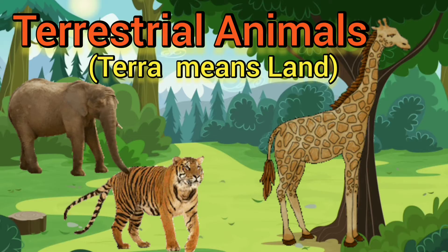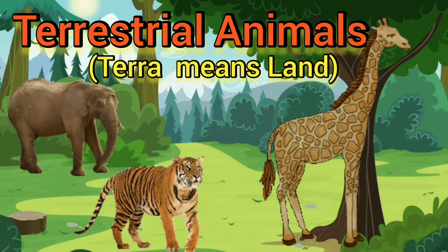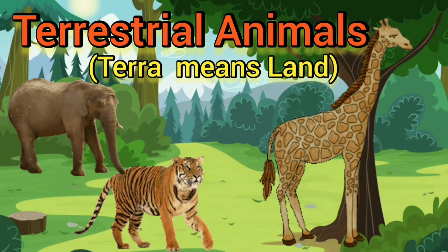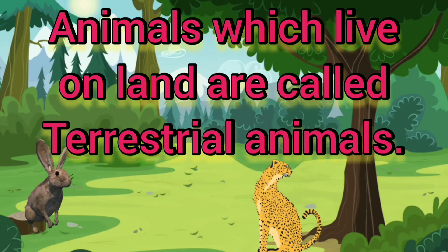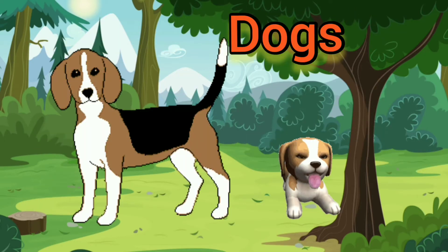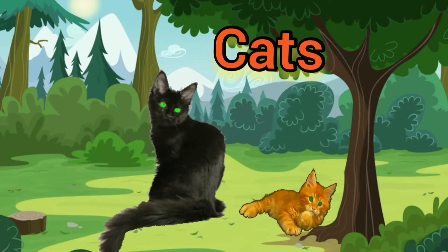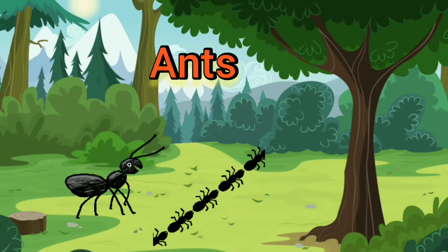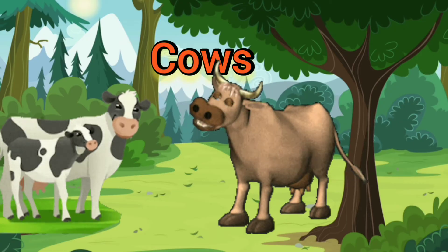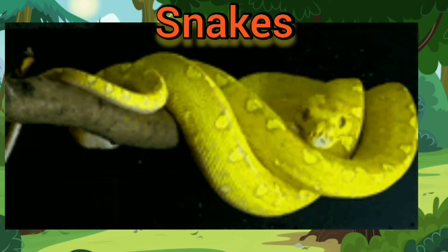Terrestrial animals. Terra means land in Latin, and that's how the name terrestrial has come about. Animals which live on land are called terrestrial animals. For example, dogs, cats, ants, cows, giraffes, and snakes.